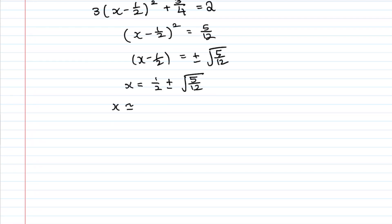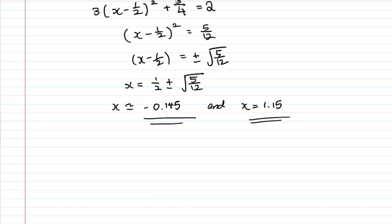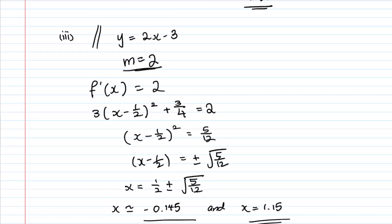In decimal form, the x-coordinates are x ≈ −0.145 and x ≈ 1.15. These are your answers when the tangent is parallel to the given line. Remember: parallel means equal gradients; perpendicular means gradients multiply to −1. This completes Question 5 — the most challenging of the first five questions, but manageable.